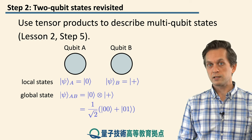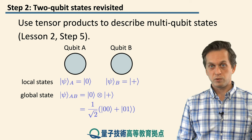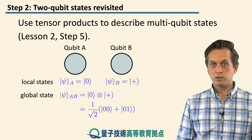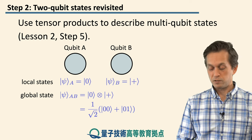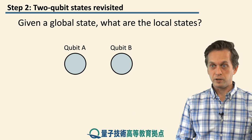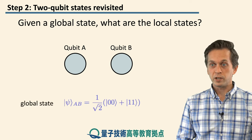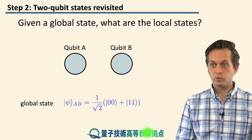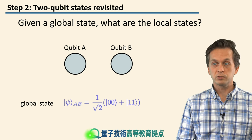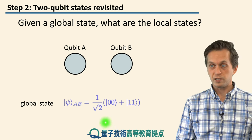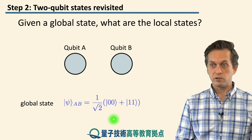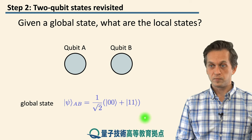So this is going from local states to global states. But we can also ask the reverse question: given a global state, how do you write the local states of the qubits? In particular, we can consider the following global state, which we encountered in the CHSH game in the previous step — an equal superposition of |0,0⟩ and |1,1⟩.